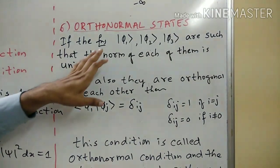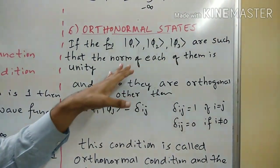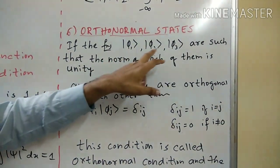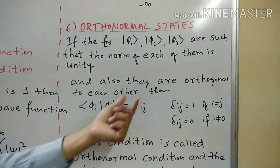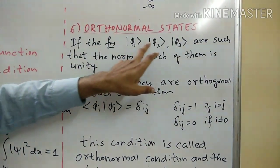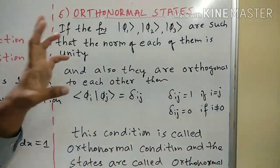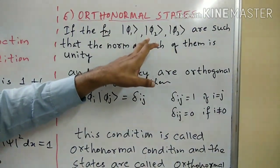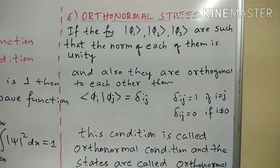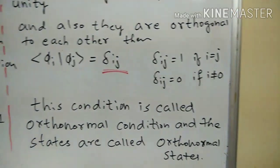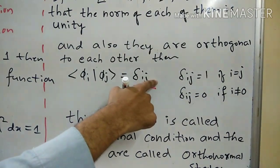The norm of each of the functions phi1, phi2, phi3 is unity, so they are normalized. One more condition is that they are orthogonal to each other — that is, if you take the inner product of phi1 and phi2, or phi1 and phi3, or phi2 and phi3, you get zero. So two conditions must hold: the vectors are normalized, and they are orthogonal to each other. This condition can be written in terms of the Kronecker delta: the inner product of phi-i and phi-j equals delta-ij.